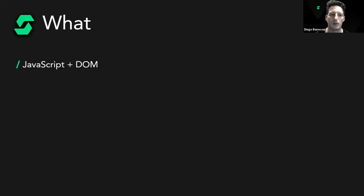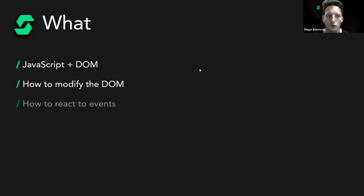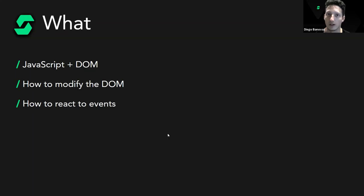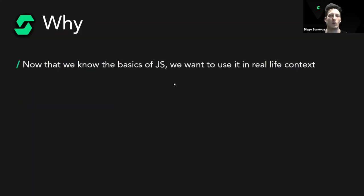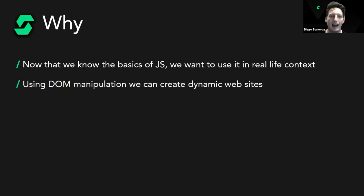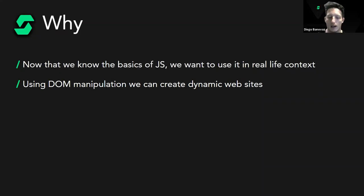We will start using JavaScript together with the DOM — the Document Object Model — to modify what the user will actually see and the behavior to expect from the page. We're going to see how to modify the DOM and how to react to events, and we can create dynamic websites that change in behavior and look and feel depending on the user.